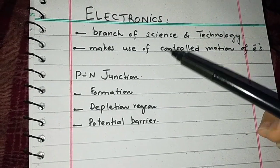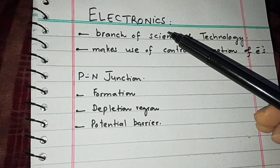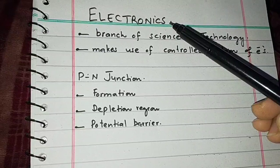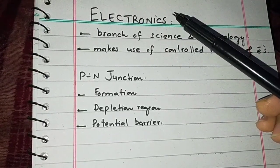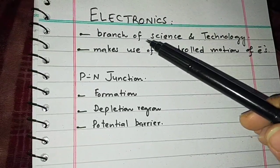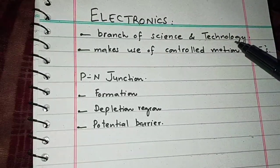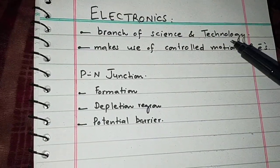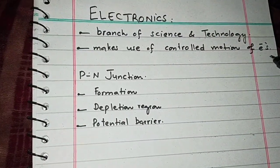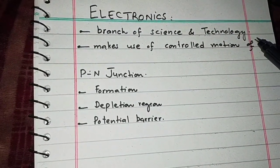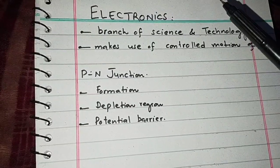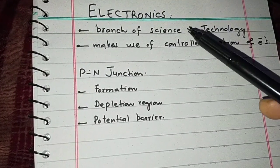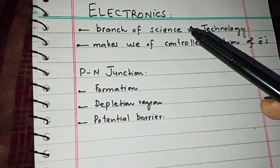Assalamu alaikum students, today we are going to start chapter number 18, that is electronics. First of all, what is electronics? Electronics is a branch of science and technology that makes use of the controlled motion of electrons. The most important thing is that it makes use of semiconductor materials as its sole part.